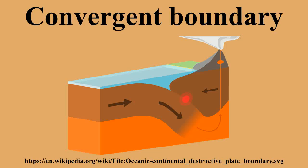In a subduction zone, the subducting plate, which is normally a plate with oceanic crust, moves beneath the other plate, which can be made of either oceanic or continental crust. During collisions between two continental plates, large mountain ranges such as the Himalayas are formed. The nature of a convergent boundary depends on the type of plates that are colliding, where a dense oceanic plate collides with a less dense continental plate. The oceanic plate is typically thrust underneath because of the greater buoyancy of the continental lithosphere, forming a subduction zone.